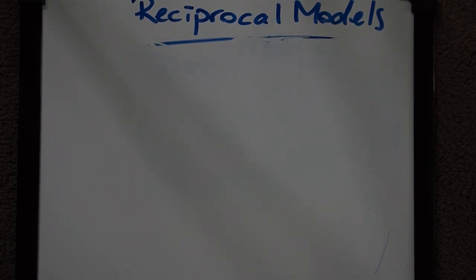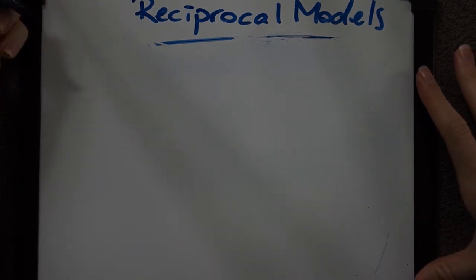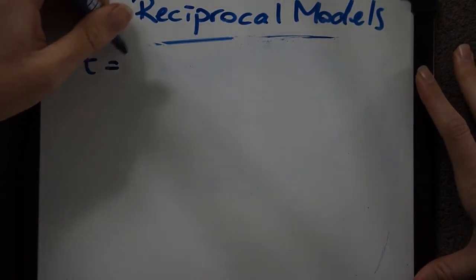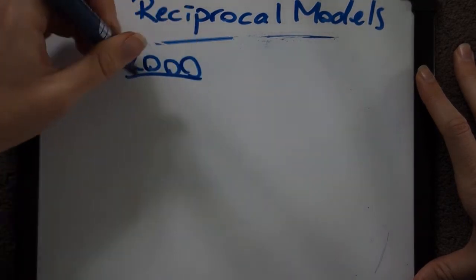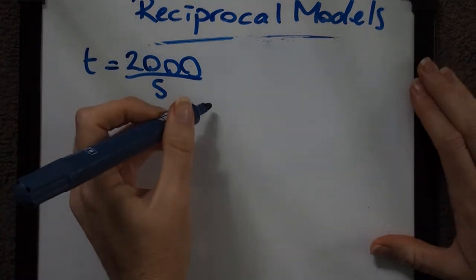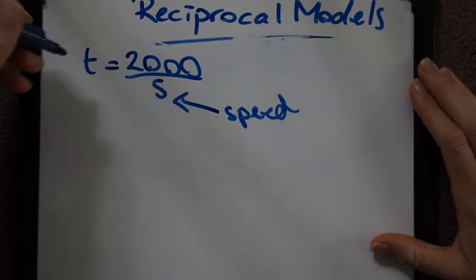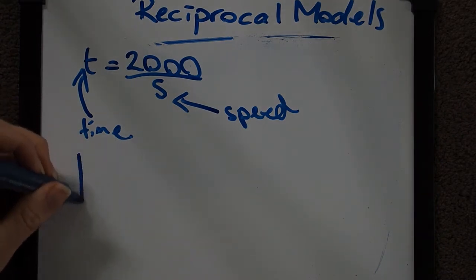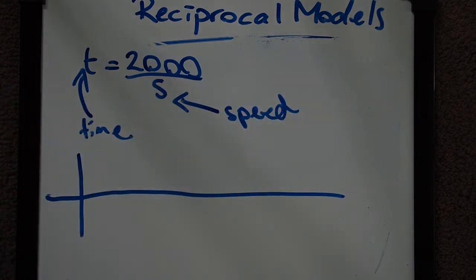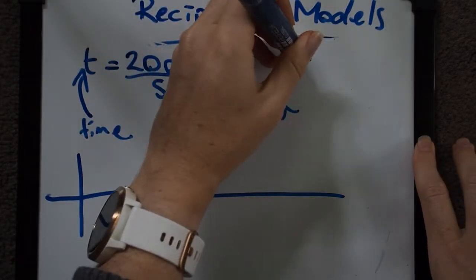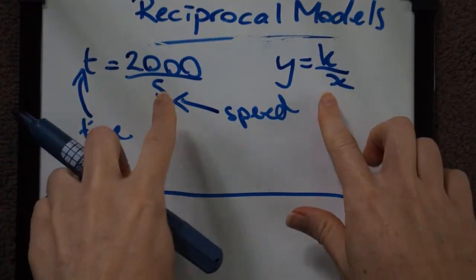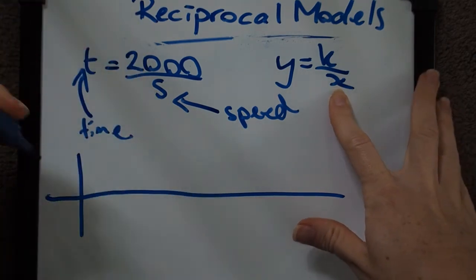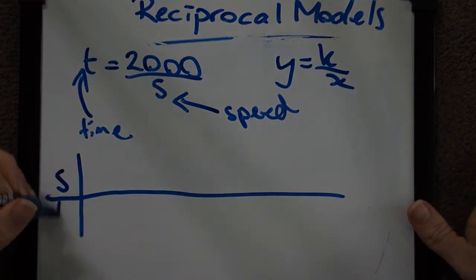Let's look at our first example where we're looking at the time taken in hours for a road trip at speed s in kilometers per hour given by the reciprocal function t equals 2000 over s. It's really important to remember s is speed and t is time. When we construct a table of values, we have to work out which is in the position of the x and which is in the position of the y. Our s is in the same position as the x, so the s is in our top row of our table of values and the t is in the bottom row.